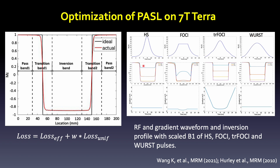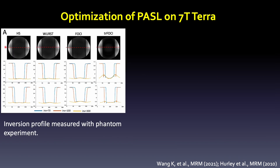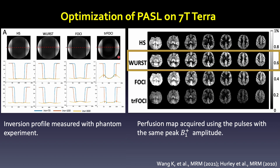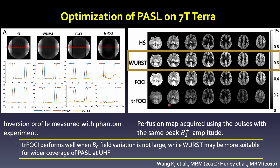Here are their waveforms as well as their simulated profiles at different B1 magnitudes. Here is the inversion profile in a gel phantom with equal SAR and equal B1 magnitude. Here are the in vivo results using these four different adiabatic pulses. Our results have shown that the WURST pulse performs most optimally in terms of inversion efficiency as well as inversion band uniformity. Literature on the TI-foresight pulse shows it performs optimally when B0 field variation is not large. Our suggestion is that WURST may be more suitable for wide coverage PASL.